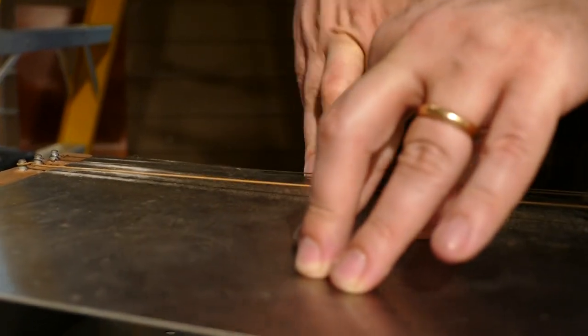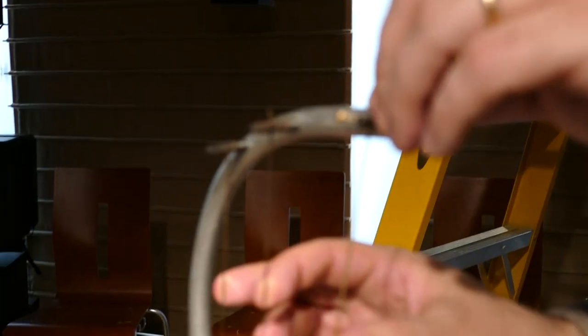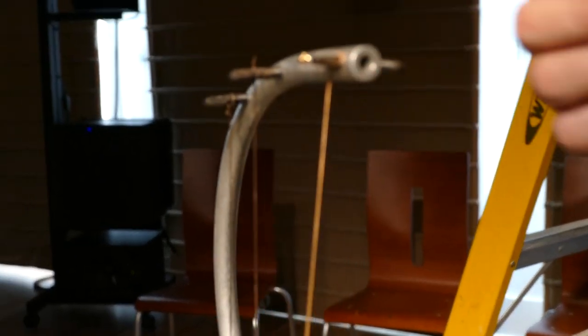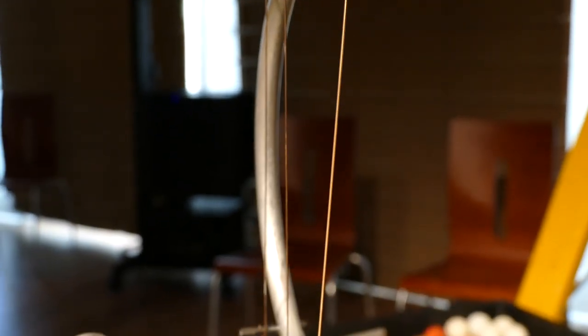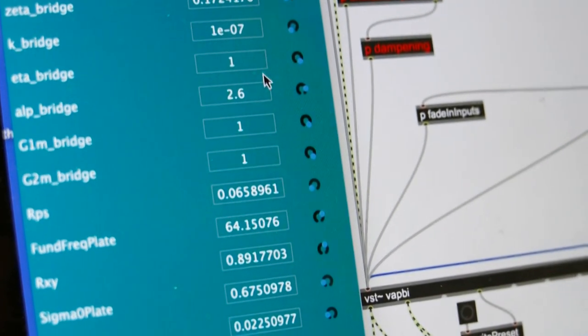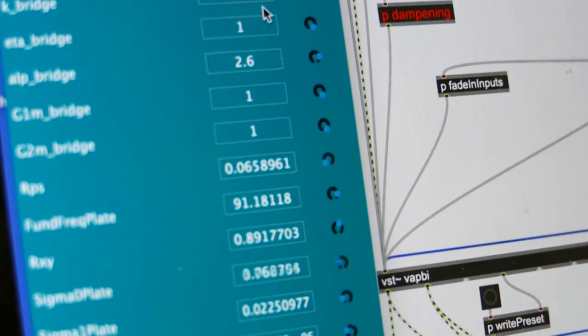The other thing about physical modeling that's interesting to me is that you can also play with it in real time in ways that you can't with a regular instrument. For example, if you had a piano, you can't really change the size of the piano in real time, or you can't change it from being made out of one material into another, right? Well, with physical modeling you can.